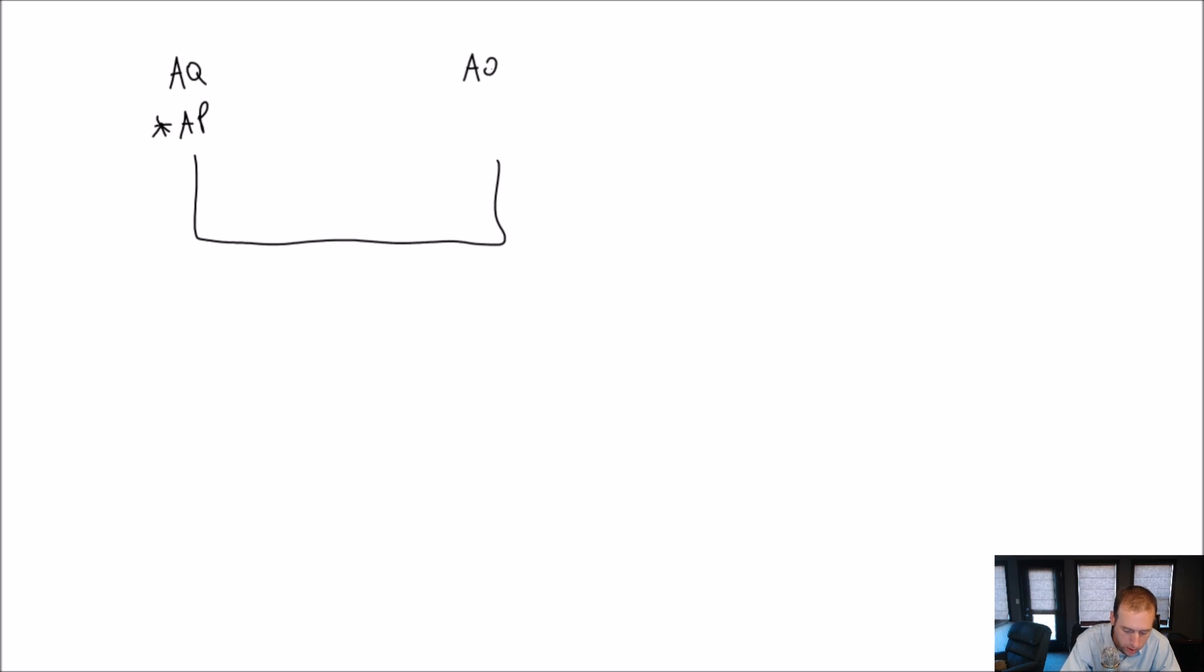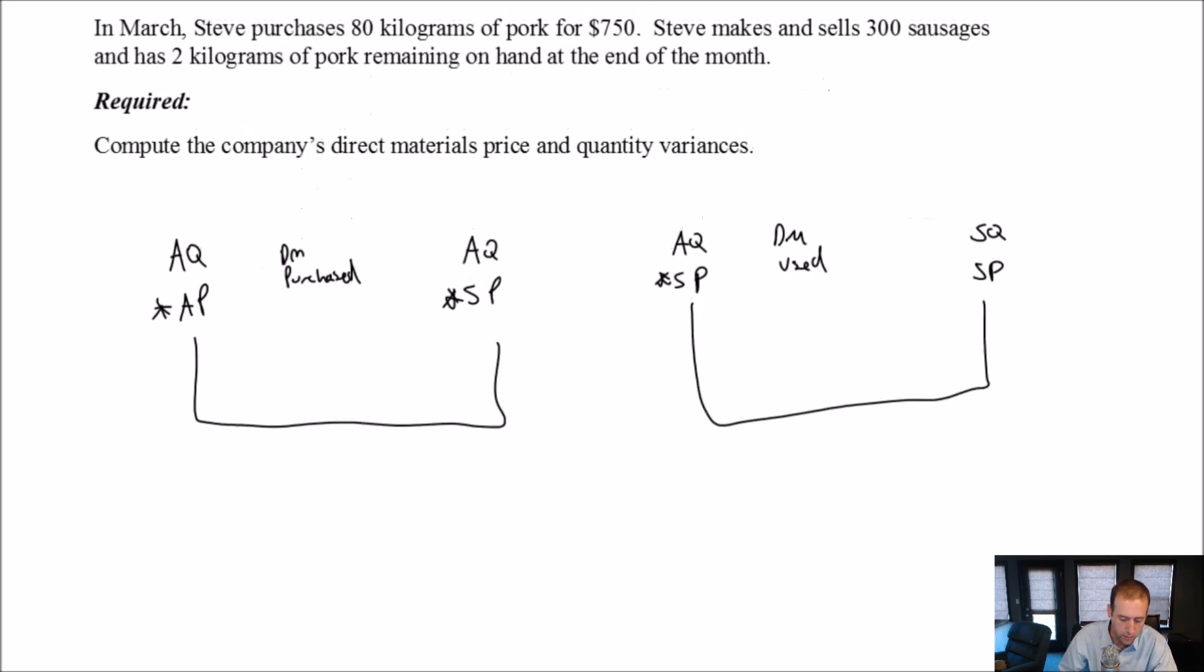AQAP, AQSP, and then on the right side again, AQSP, and SQSP. And remember that this is for direct materials purchased, and the right one is for direct materials used.